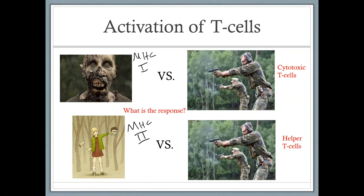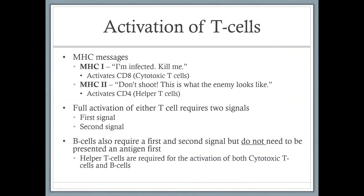If you understand the role of cytotoxic versus helper T cells, you understand the response. MHC-1 says 'I'm infected, kill me' — cytotoxic T cells interact and kill. MHC-2 says 'Don't kill me, I've encountered the enemy, this is what they look like, this is how you kill them' — helper T cells say 'Thank you, we'll pass that on to our foot soldiers.' Full activation of either T cell, whether cytotoxic or helper, requires two signals — first signal and then a second signal. This is like taking the safety off your gun: gun drawn, safety off, now you're ready to be activated.